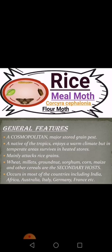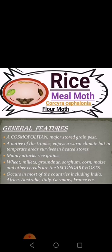Some general features of the rice meal moth or Corcyra cephalonica: first, it is cosmopolitan — cosmopolitan means it is widely spread throughout most parts of the world. It can move from one part of the world to another where it has not existed before, and it can spread very rapidly. That's why it makes major attacks on stored grain pests.